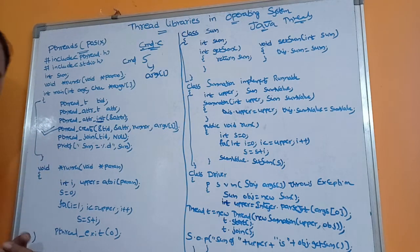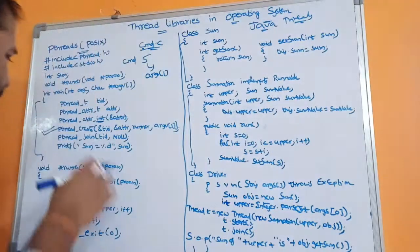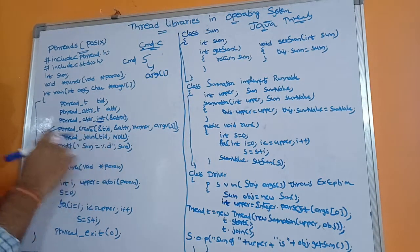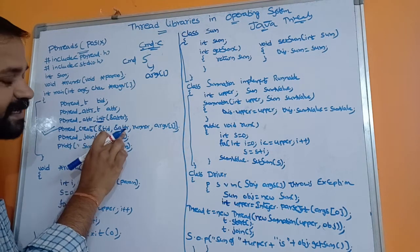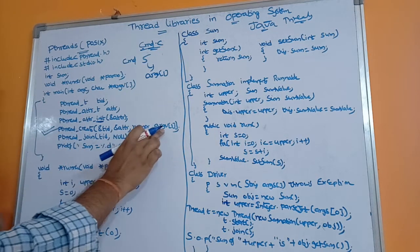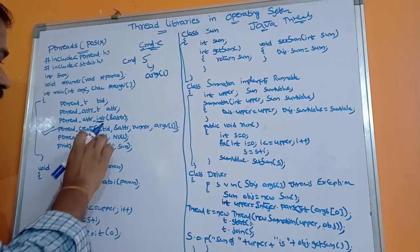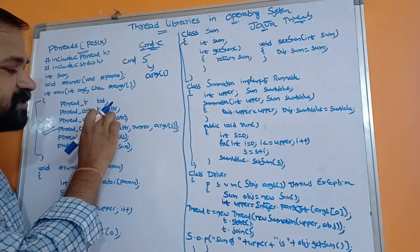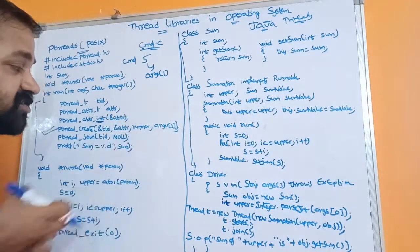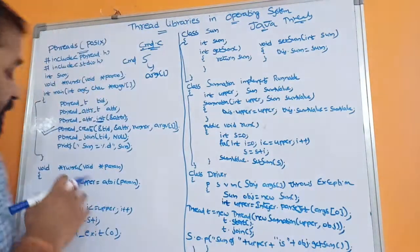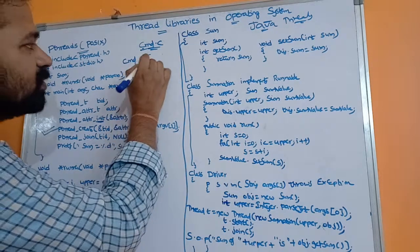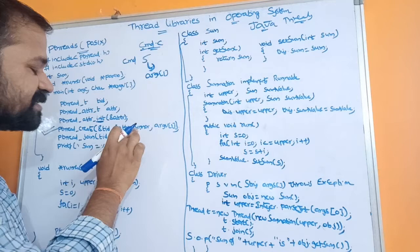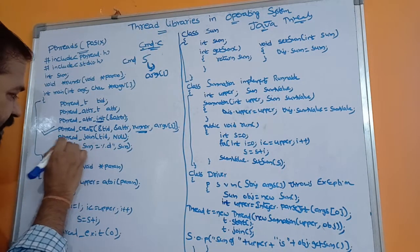The most important statement is 'pthread_create', which is used to create a thread. It accepts four arguments: the thread identification number, the attribute information, the function to run, and the value to pass. We specify '&tid' for the thread ID, '&attr' for attributes, 'runner' as the function containing the thread code, and 'argv[1]' which holds the number whose sum we are computing.